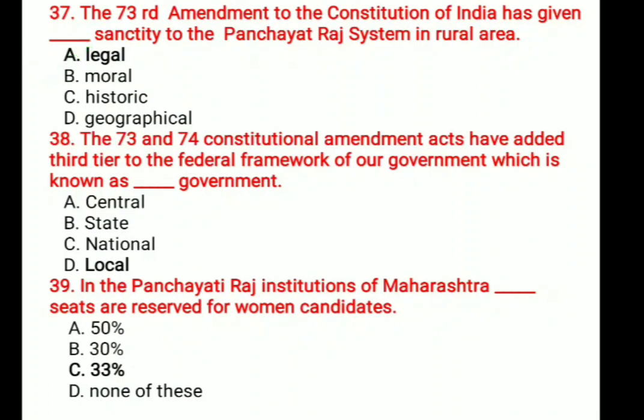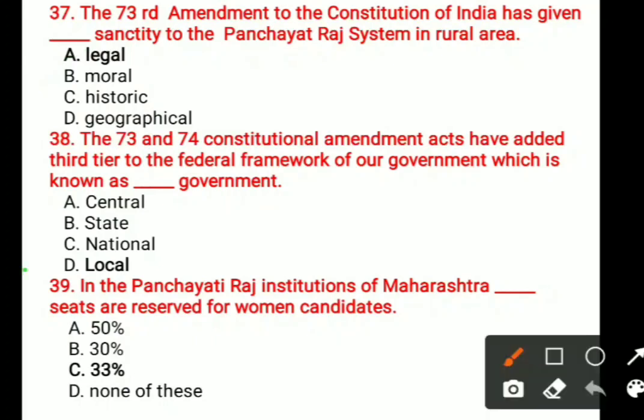Question number 38: The 73rd and 74th Constitutional Amendment Act have added a third tier to the federal framework of our government, which is known as blank government. The three-tier system is: at grassroot level that is Gram Panchayat, at Taluka level that is Panchayat Samiti, and at district level Jilla Parishad. We call it the Panchayat system. The correct answer is local government.